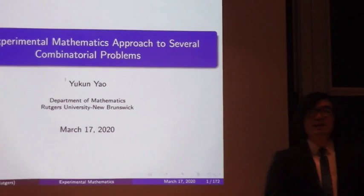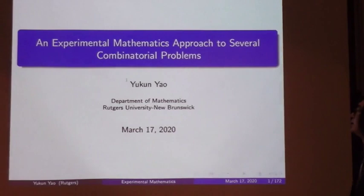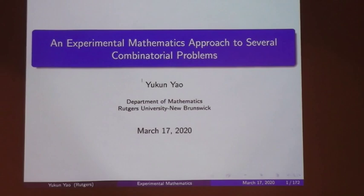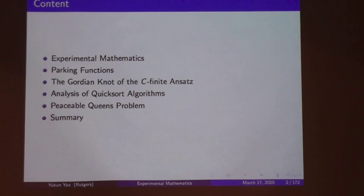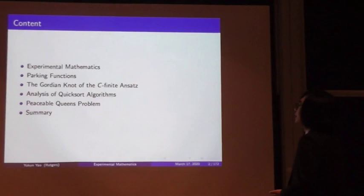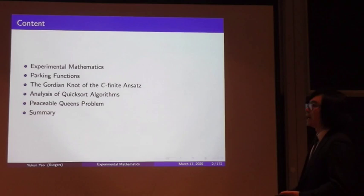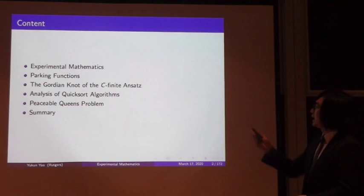Thank you for coming to my defense today, either in person or remotely, especially at this very difficult time and under this very challenging situation. Today I'm going to talk about an experimental mathematics approach to several combinatorial problems. The content will cover: what is experimental mathematics, parking functions, the golden knot of the C-finite ansatz, analysis of quicksort algorithms, and Peter Winkler's peaceable queens problem, followed by a summary.